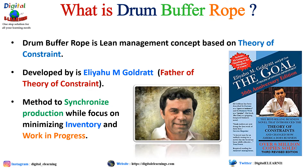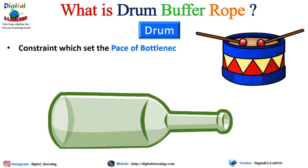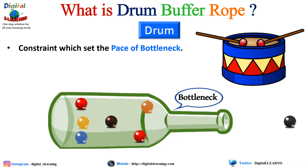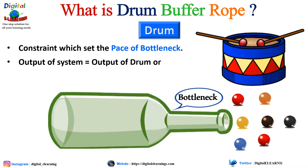Let us understand what Drum, Buffer, and Rope mean with some examples. The Drum is the constraint that sets the pace — it is the bottleneck where the process is working. It limits your final output and has more demand than its available capacity, so the output of the system equals the output of the drum. The bottleneck sets the rhythm for the entire process.